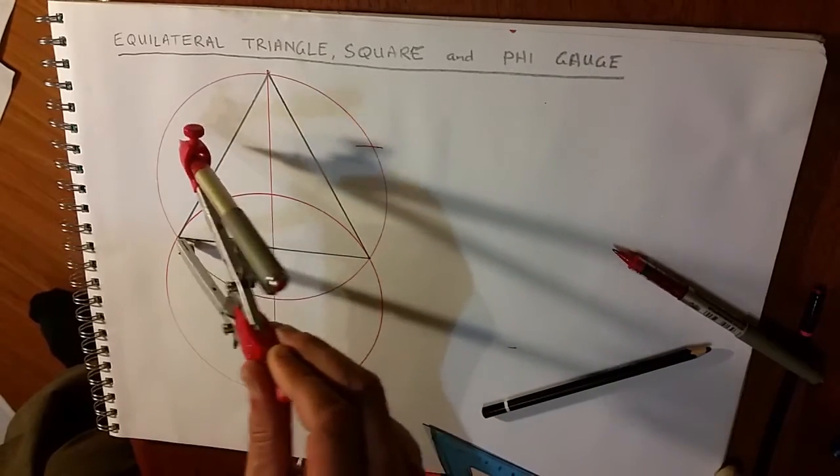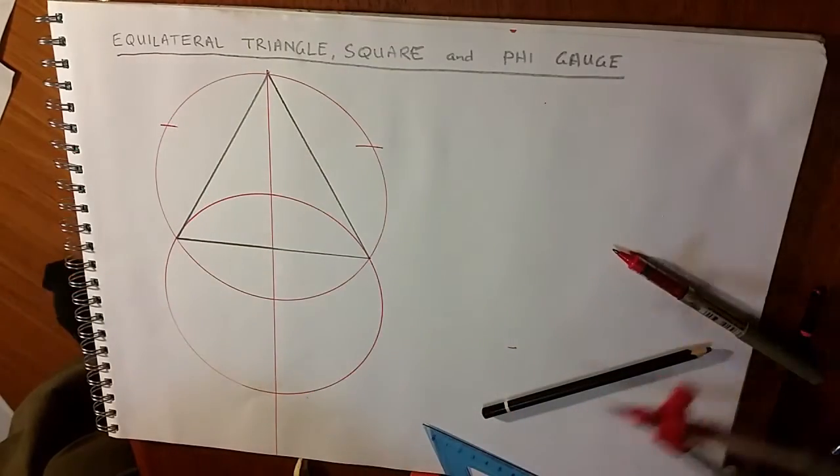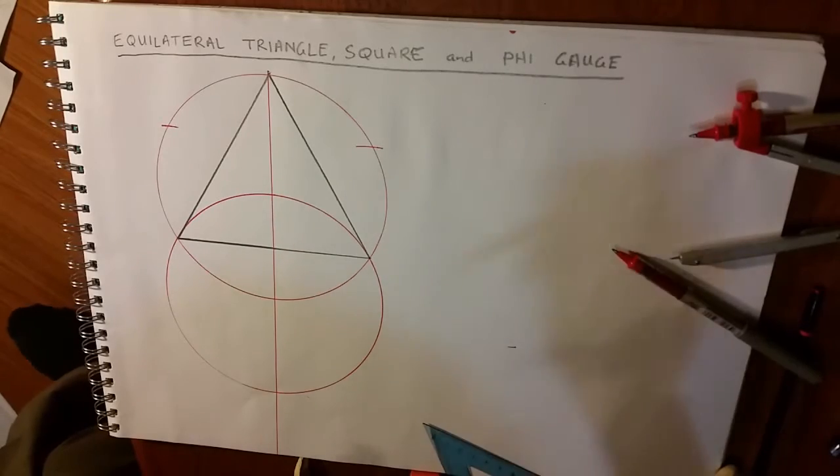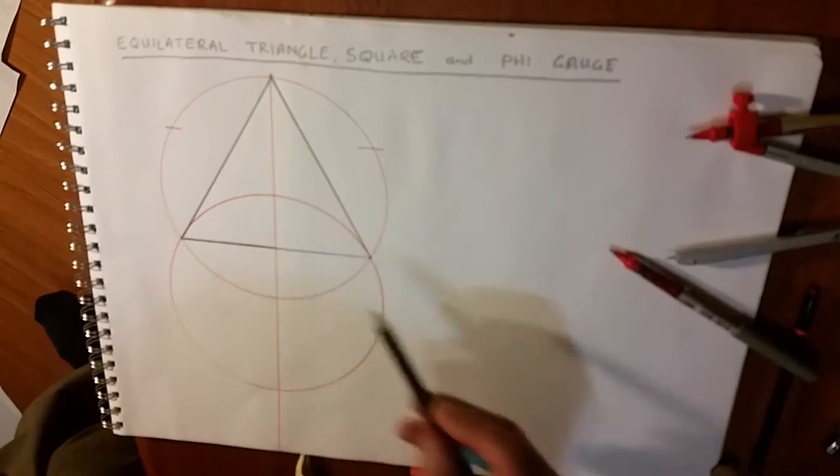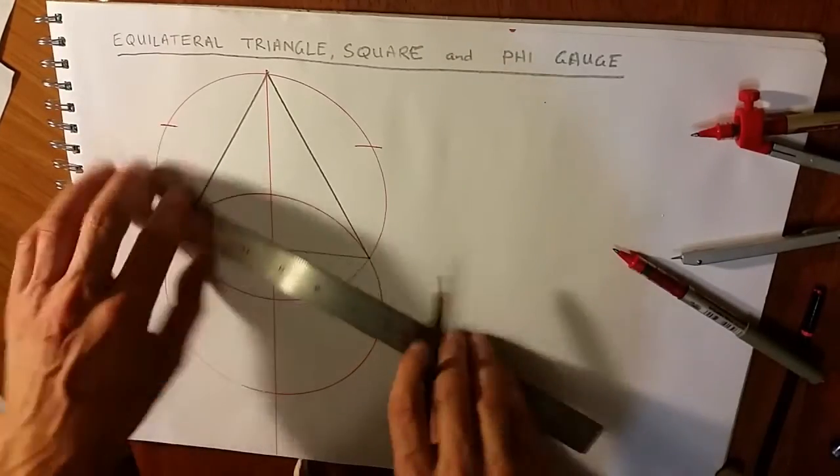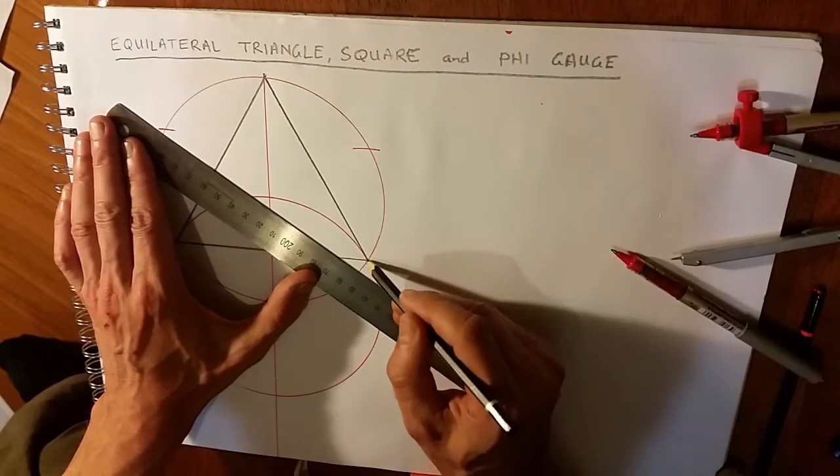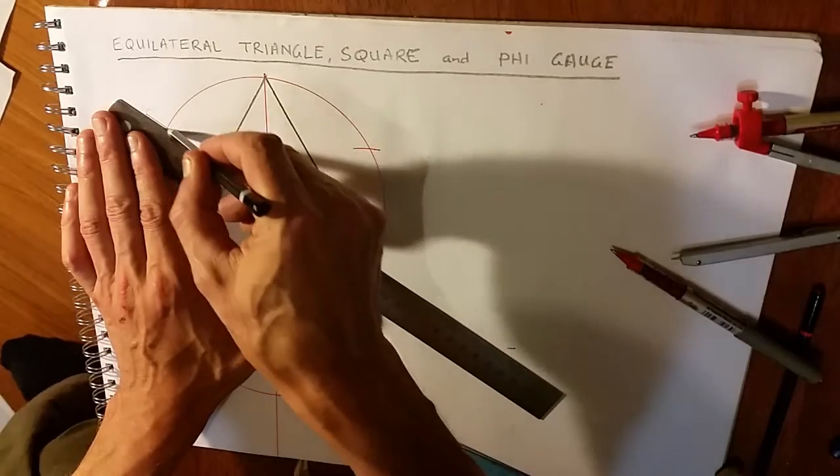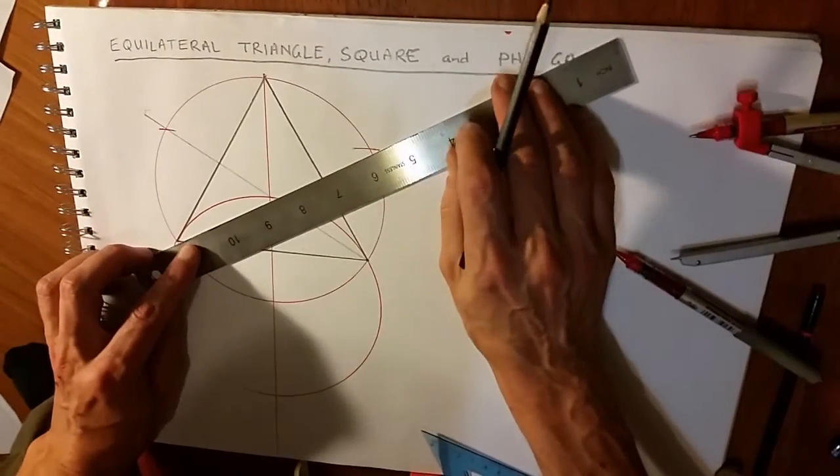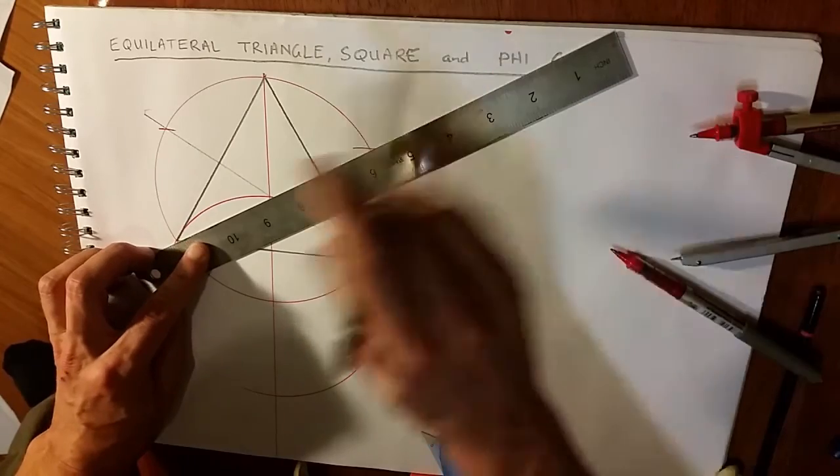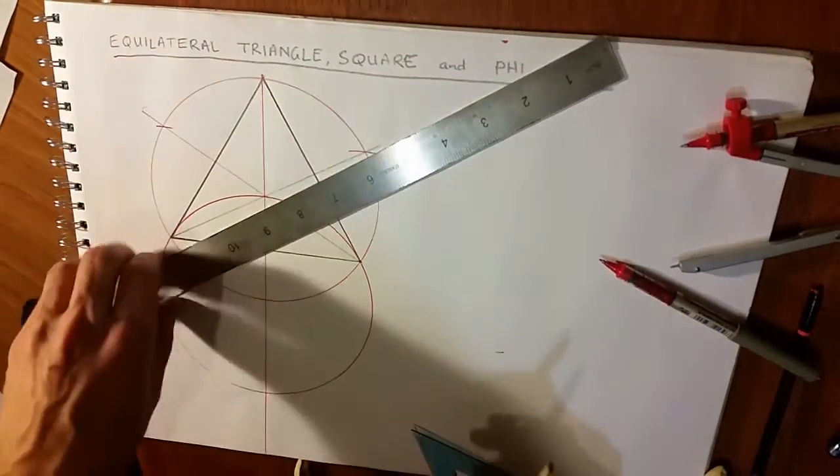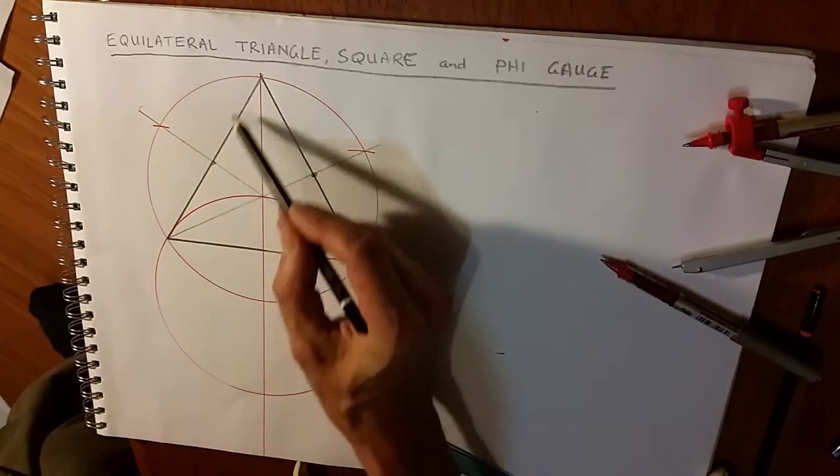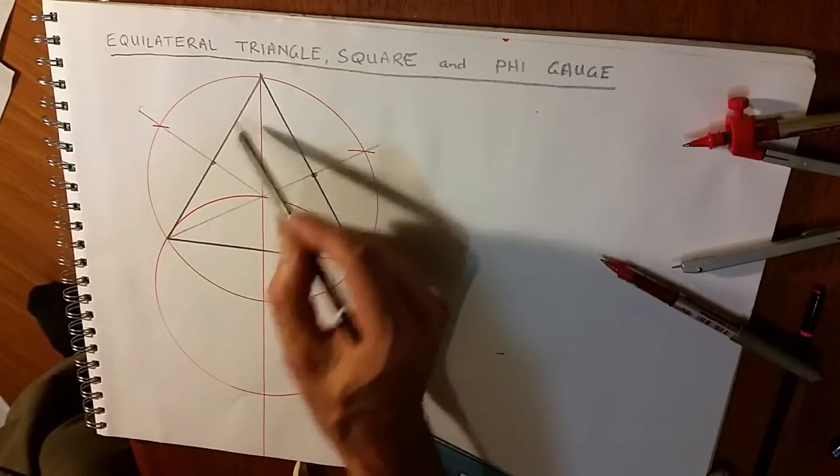And on the other side, same thing. Because of the rules of the hexagon, what we've done is bisect the angle. I'll draw a soft construction line. And the same across. Now where these two points have come, we have bisected this line.